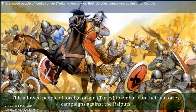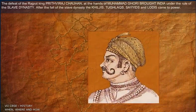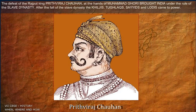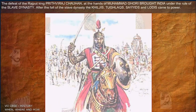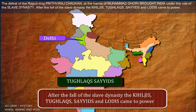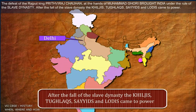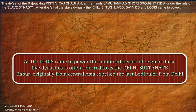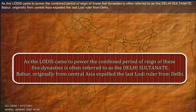This allowed people of foreign origin, the Turks, to embark on their victory campaign against the Rajputs. The defeat of Rajput king Prithviraj Chauhan at the hands of Mohammed Ghori brought India under the rule of the slave dynasty. After the fall of the slave dynasty, the Khiljis, Tughlaqs, Sayyids and Lodis came to power. The combined period of reign of these five dynasties is often referred to as the Delhi Sultanate.